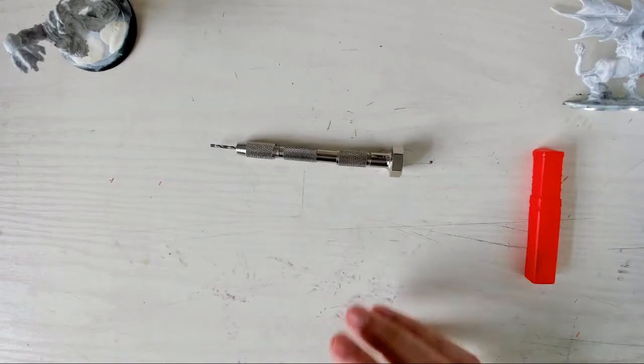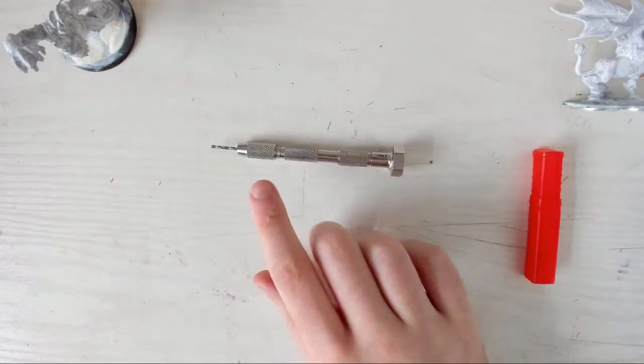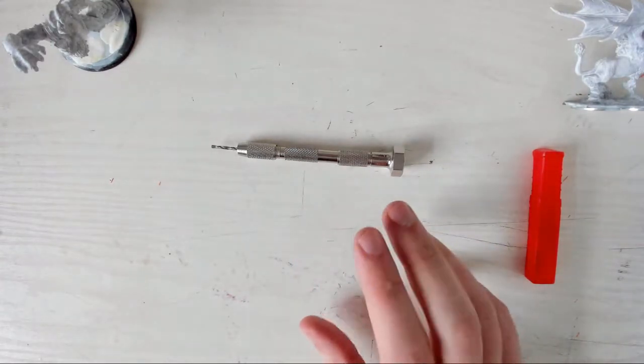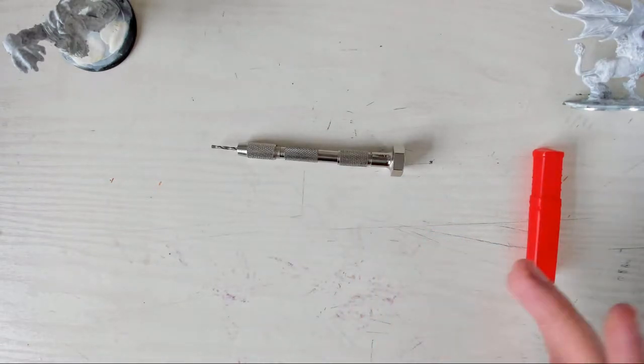Pinvice bits can drill through plastic and pewter, or lead minis, pretty easily. You might need to apply a bit more pressure for resin minis, as some manufacturers use a denser resin than others, and it might be a bit more tricky to drill through. That's your pinvice sorted. What else do you need?